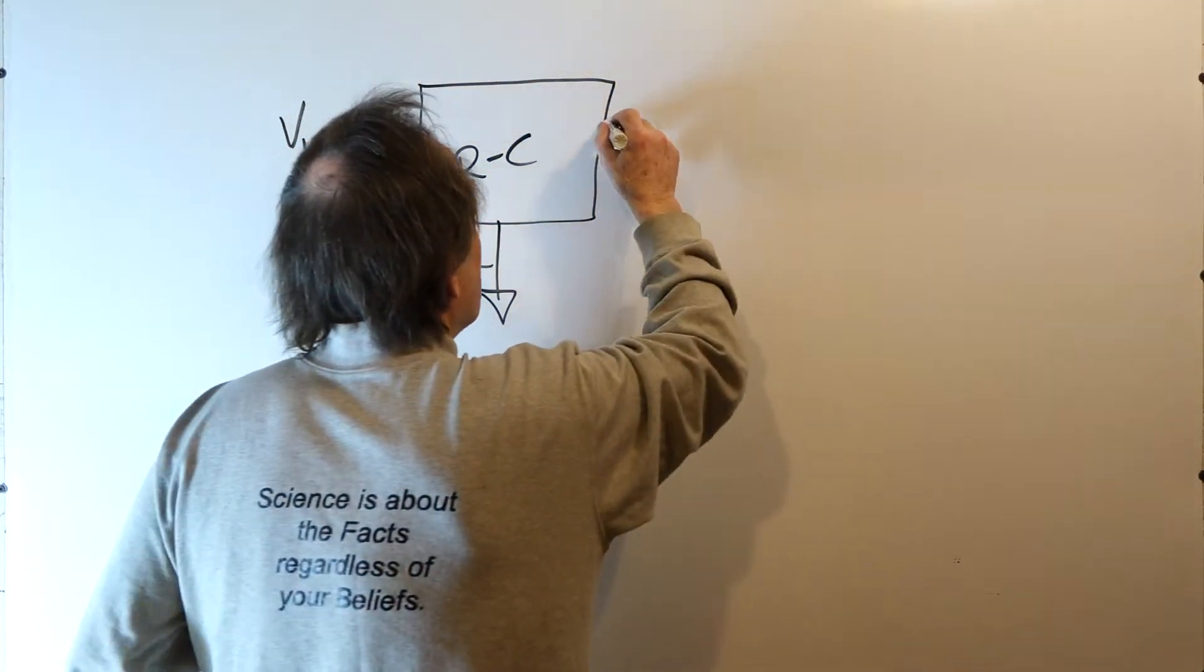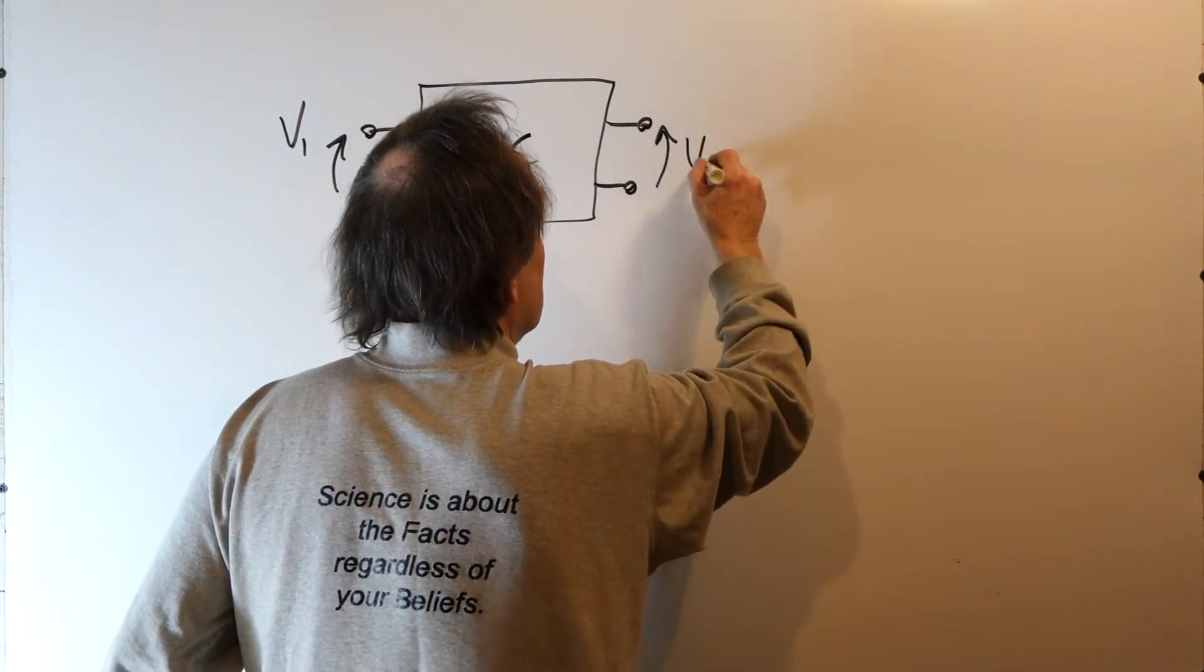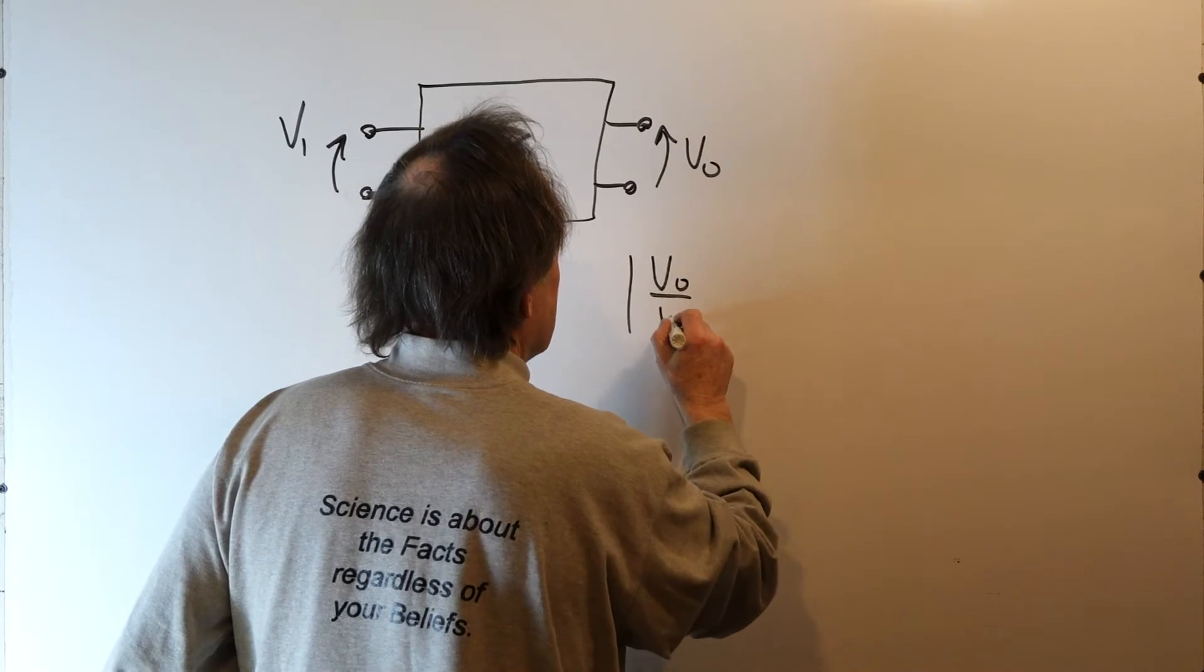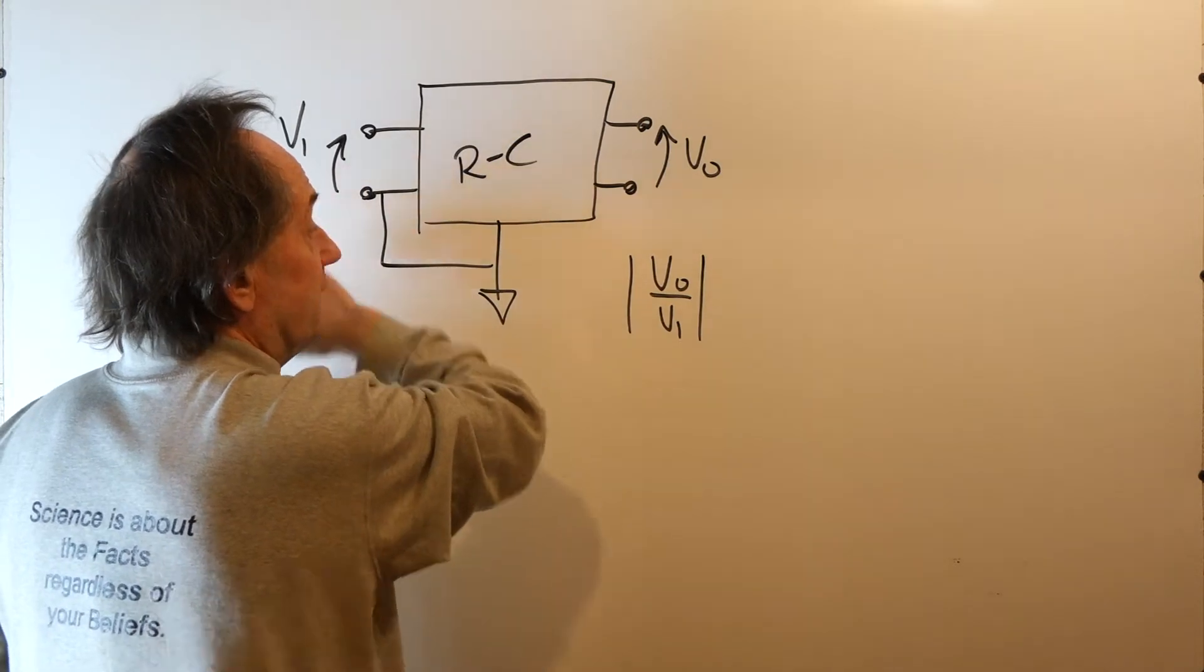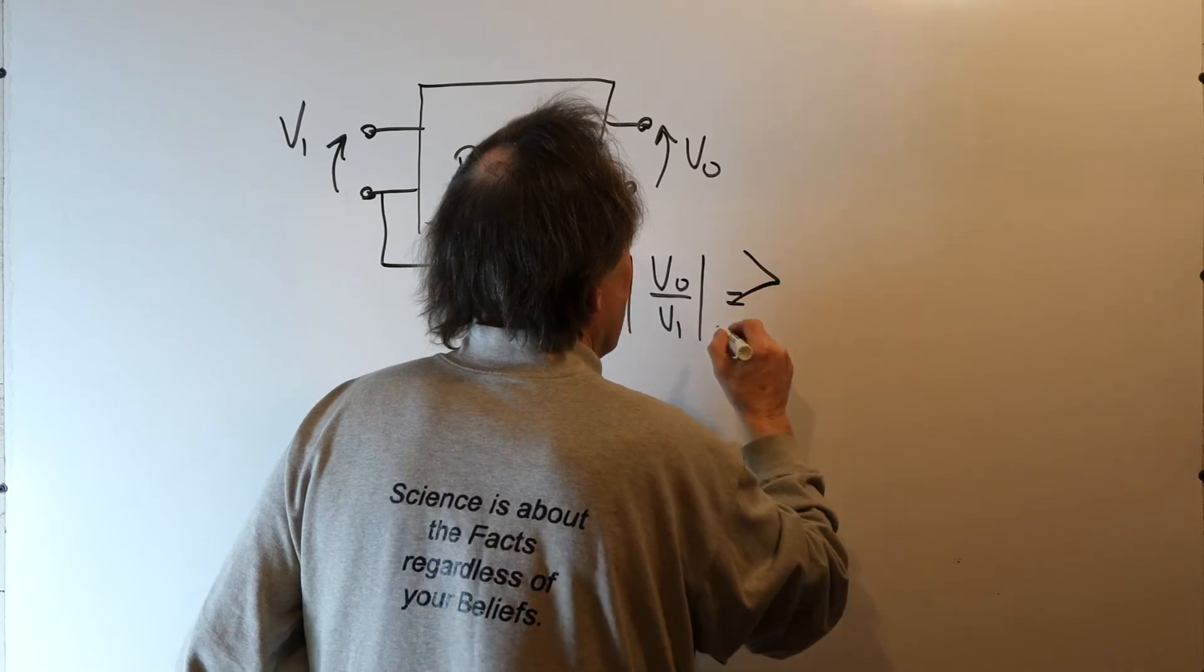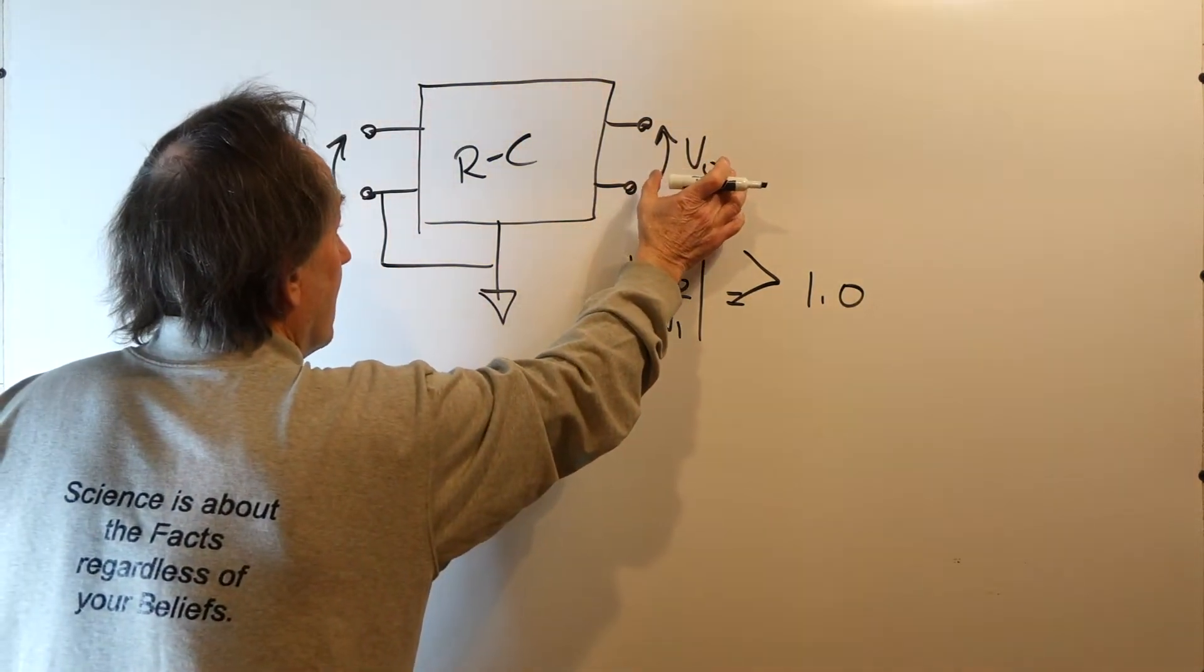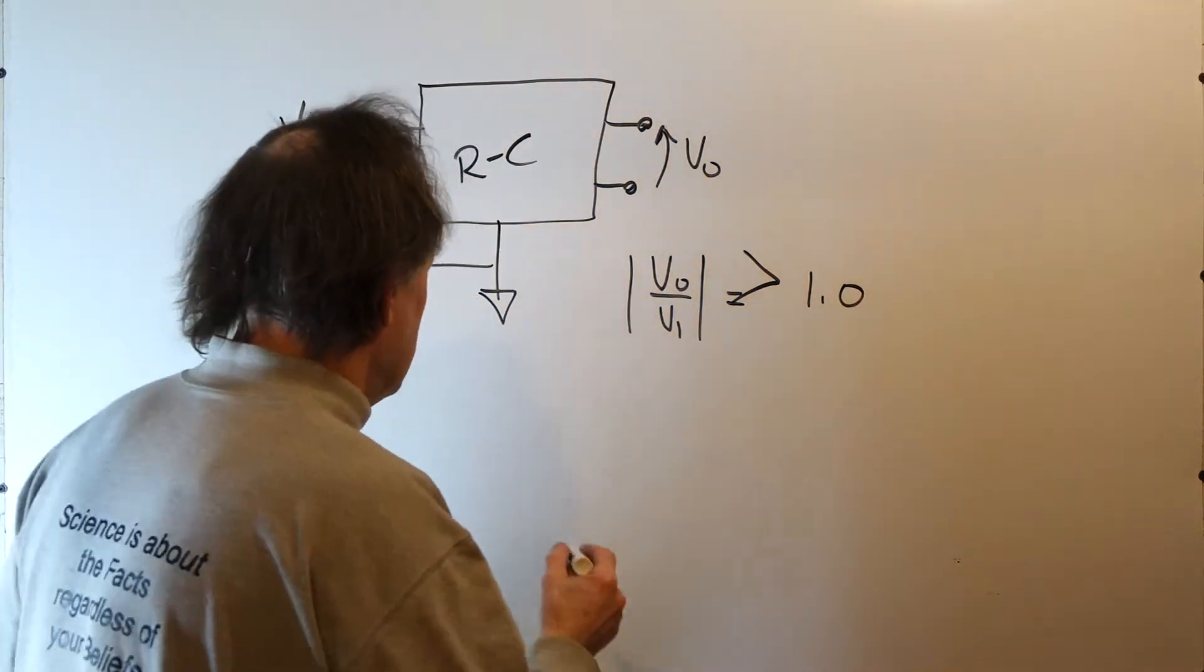And you pick two nodes in the network as your output terminals. So the question is, is it possible over some band of frequencies, as you sweep the frequency of V1, for the magnitude to be greater than one? Is the ratio of your output voltage to the input voltage, is it possible to get a voltage gain?